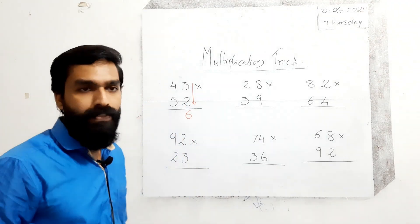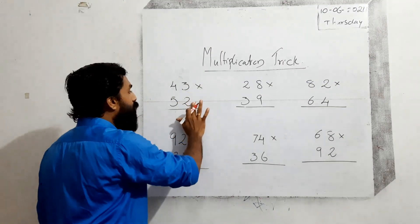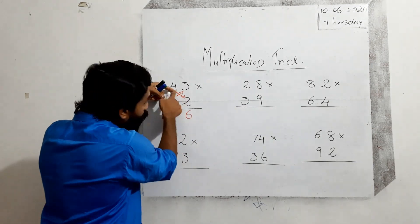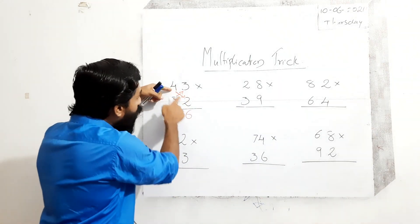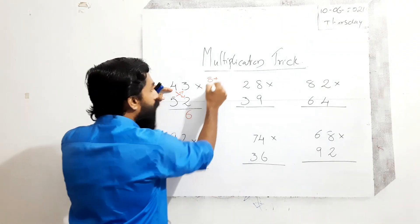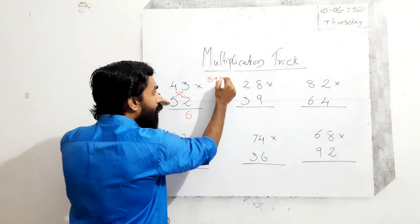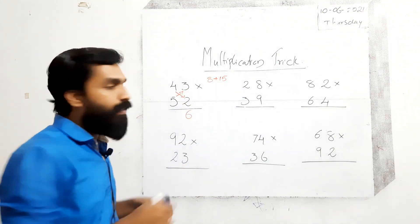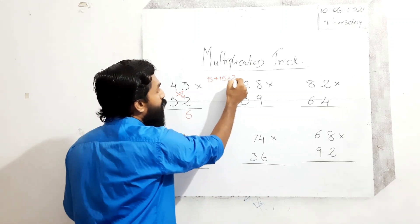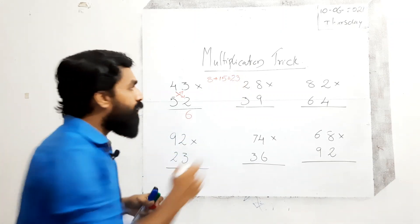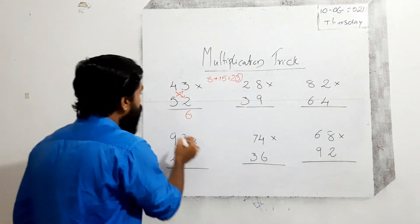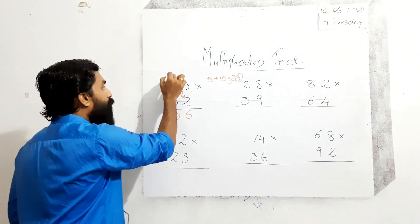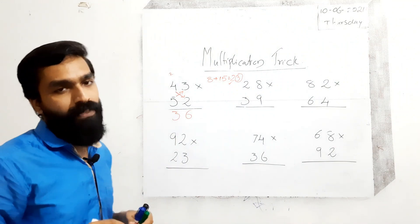3 into 2 is equal to 6. Next step: cross multiplication — multiply diagonally. 4 into 2 is equal to 8, plus 5 into 3 is equal to 15. Add those two numbers: 8 plus 15 is equal to 23. The unit digit 3 you write here, and 2 is the carry to add next.